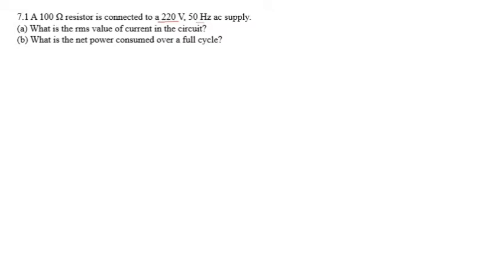What is the net power consumed over a full cycle? The values given in the question are RMS values, since voltage and current are continuously varying in AC. So V_RMS is 220 volt, frequency F is 50 hertz, and resistance R is 100 ohm.